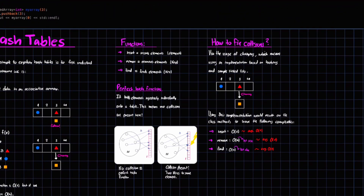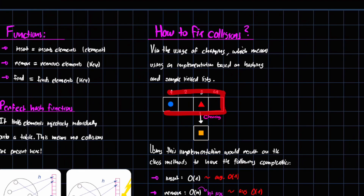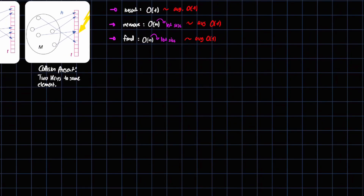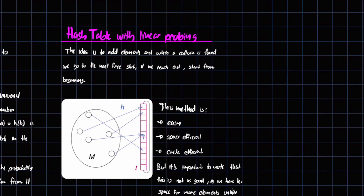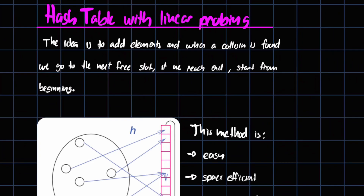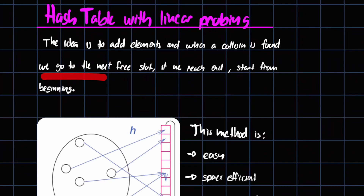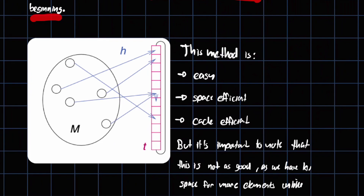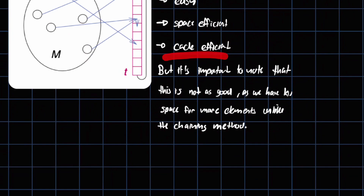We've already seen how to fix collisions using chaining. We can also use linear probing. The idea is: when adding an element and a collision is found, we go to the next free slot. If we reach the end of the table, we start from the beginning. This method is easy to implement, space-efficient, and cache-efficient, but it gives us less space for elements compared to the chaining method.